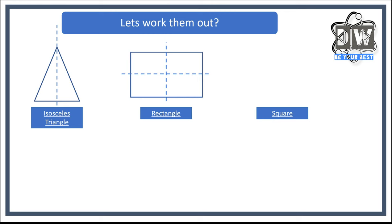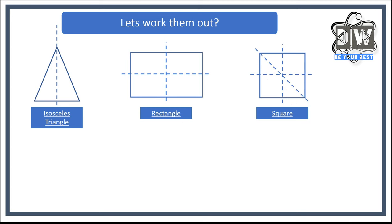Next up is a square. How many lines of symmetry does a square have? We've got one there, two there, three there, and four there. They all cut the shape in half exactly the same from one side to the other — so a square has four lines of symmetry.